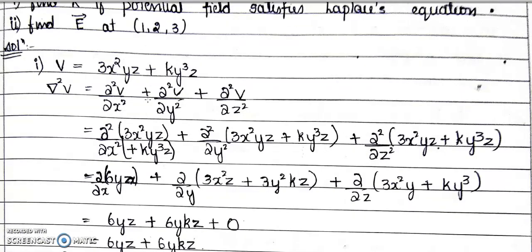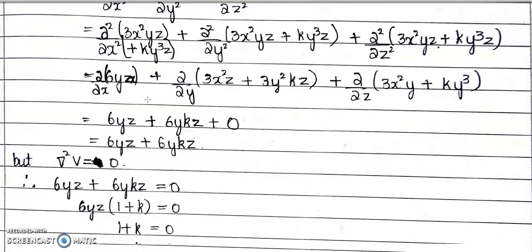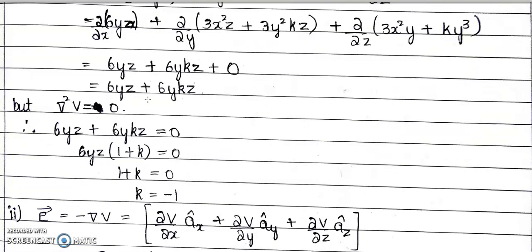The second part asks us to find the electric field intensity E at the point (1, 2, 3). We know the relation between potential and electric field intensity is expressed using the potential gradient equation: E = −∇V. In Cartesian coordinates, ∇V = (∂V/∂x)ax + (∂V/∂y)ay + (∂V/∂z)az, and E is the negative of this.